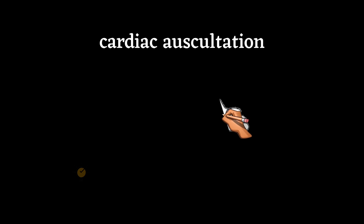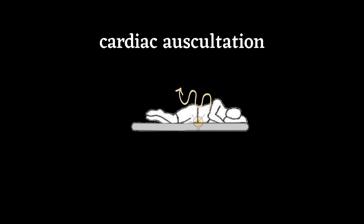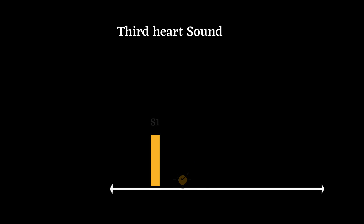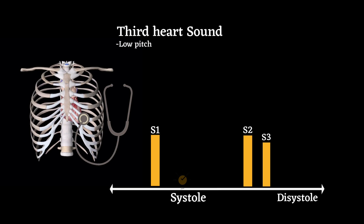After the initial cardiac evaluation, patients should be examined in the left lateral decubitus position with the diaphragm and bell of the stethoscope. In this position, the examiner should listen specifically and selectively for S3 or S4, as these sounds may be found only in this position and heard only with the bell. An S3 is a sound that occurs after the diastolic S2 dub sound; it is a low pitch sound best heard at the apex of the heart with the bell of the stethoscope.